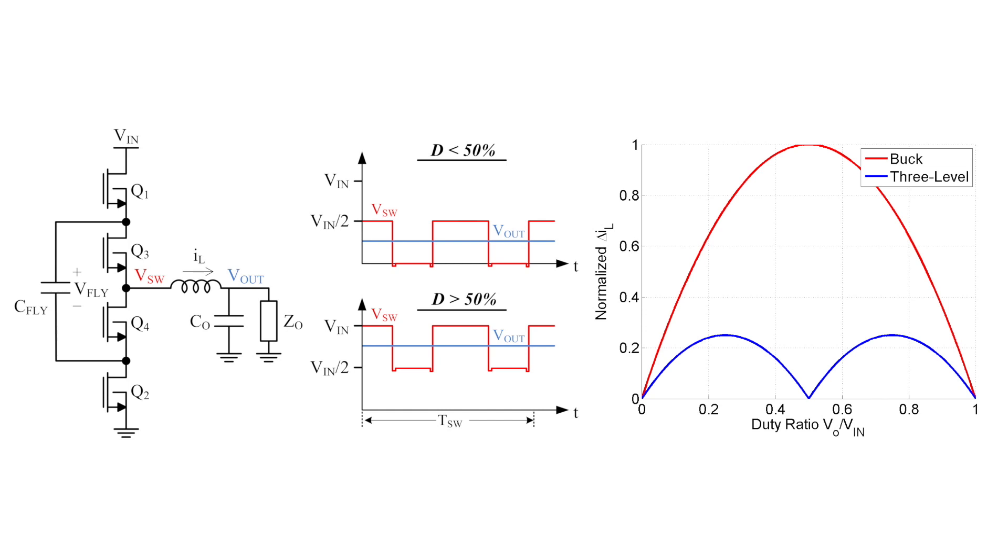Finally, the switches in the three-level only need to block half the input voltage, reducing the switching loss associated with their transitions. These benefits combine to provide a 5% higher charging efficiency while reducing the solution size by half.